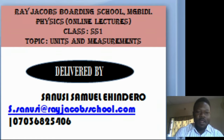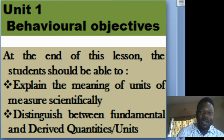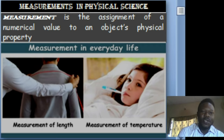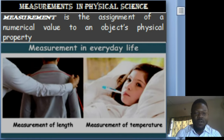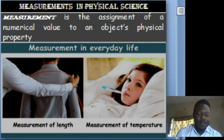To start with, let us define what we mean by measurements in physical sciences. Measurements simply mean assigning numerical values to physical properties of matter. That is, assigning values to physical properties of matter is what we mean by measurements — when you assign numerical values.